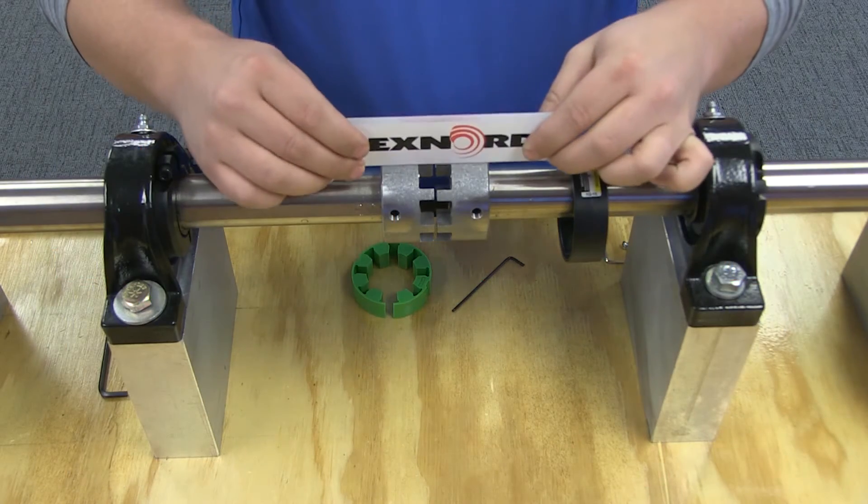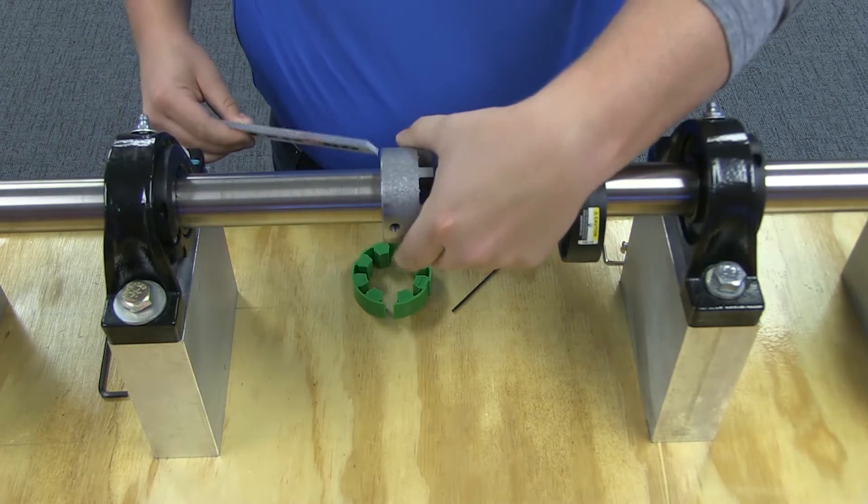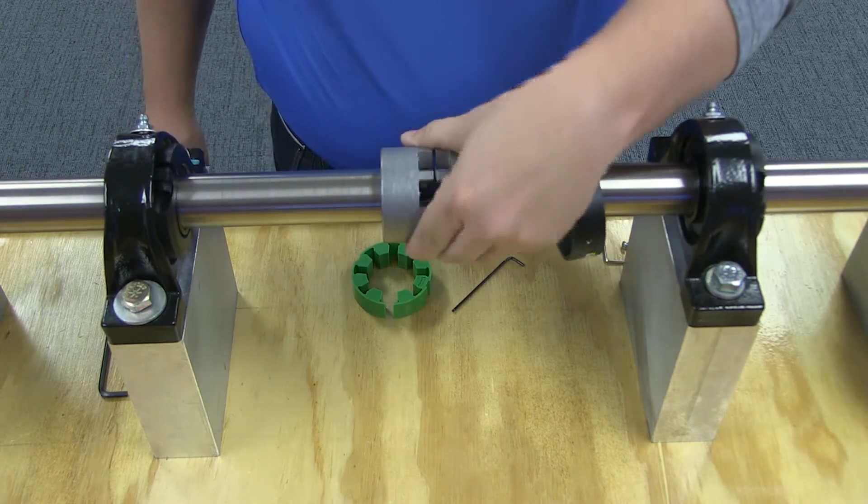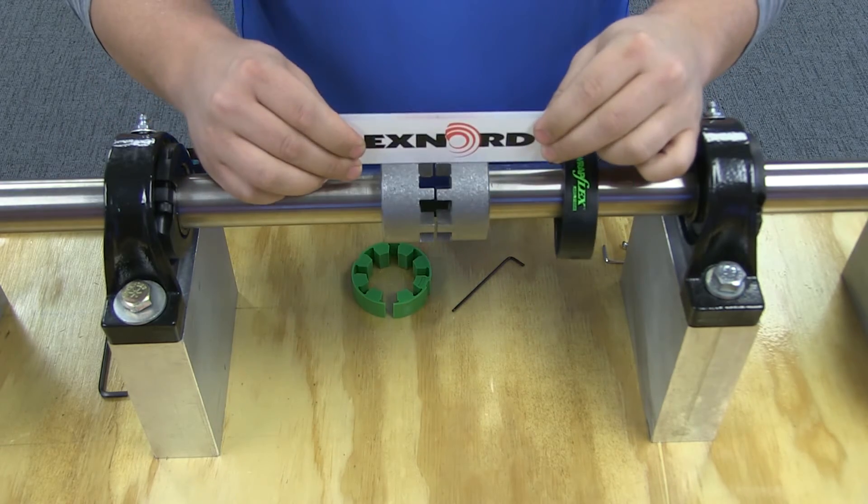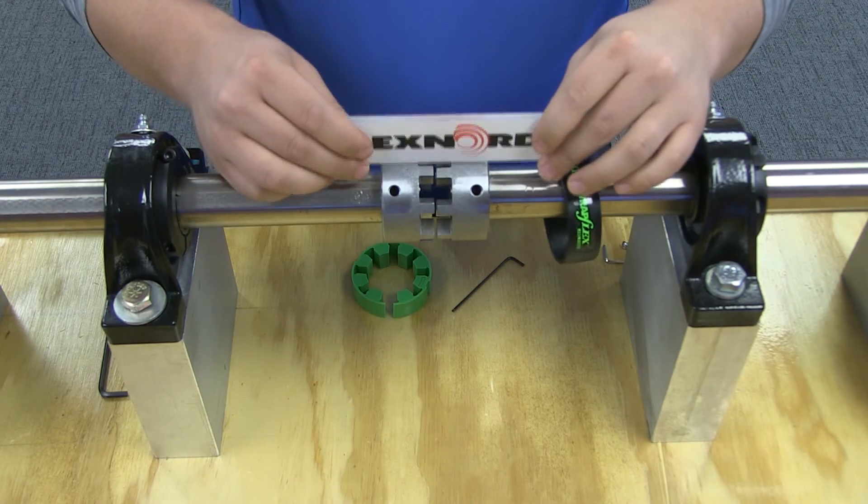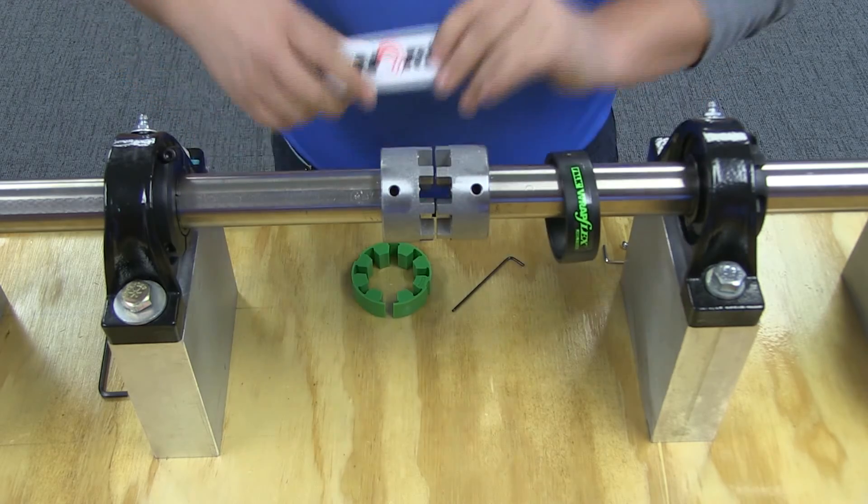Now, check the offset misalignment. Align so that a straight edge rests squarely on both hubs as shown at 90-degree intervals and check with feelers. Tighten all foundation bolts and repeat alignment checks, realigning the coupling if necessary. By minimizing misalignment, you are ensuring optimal performance of your coupling and your connected equipment.